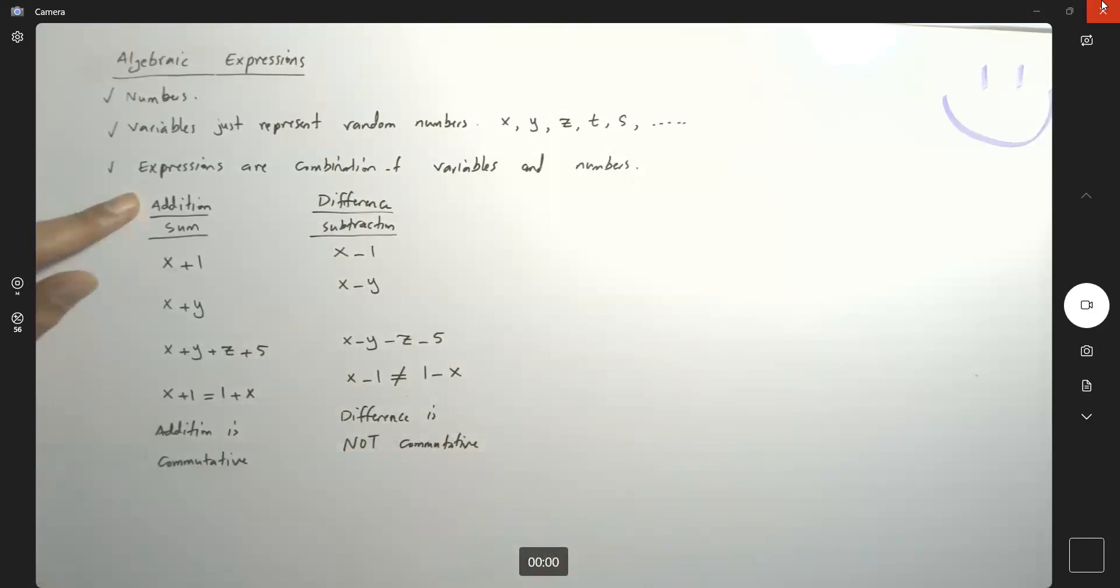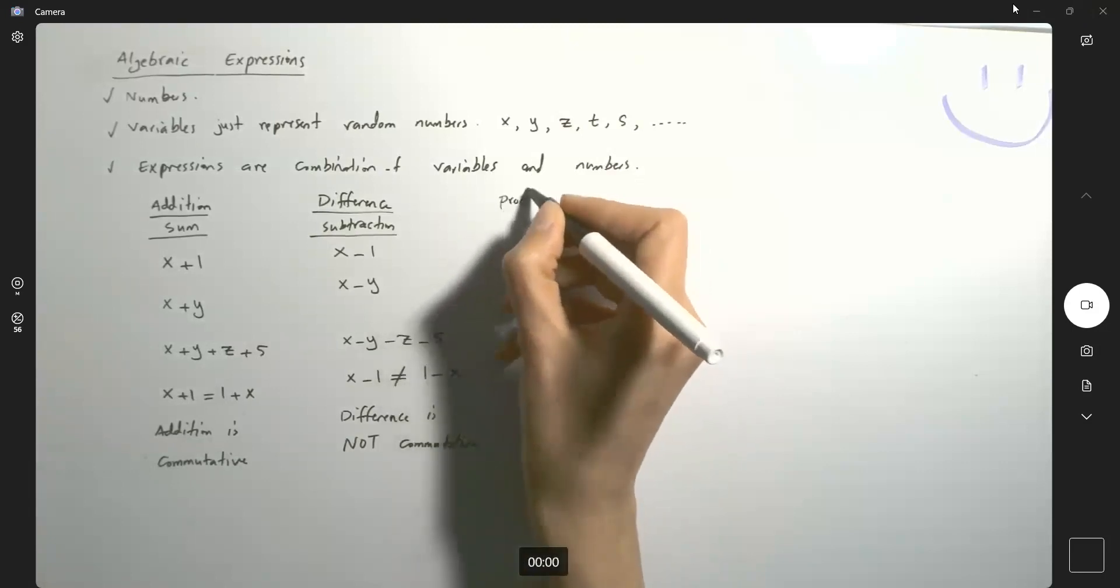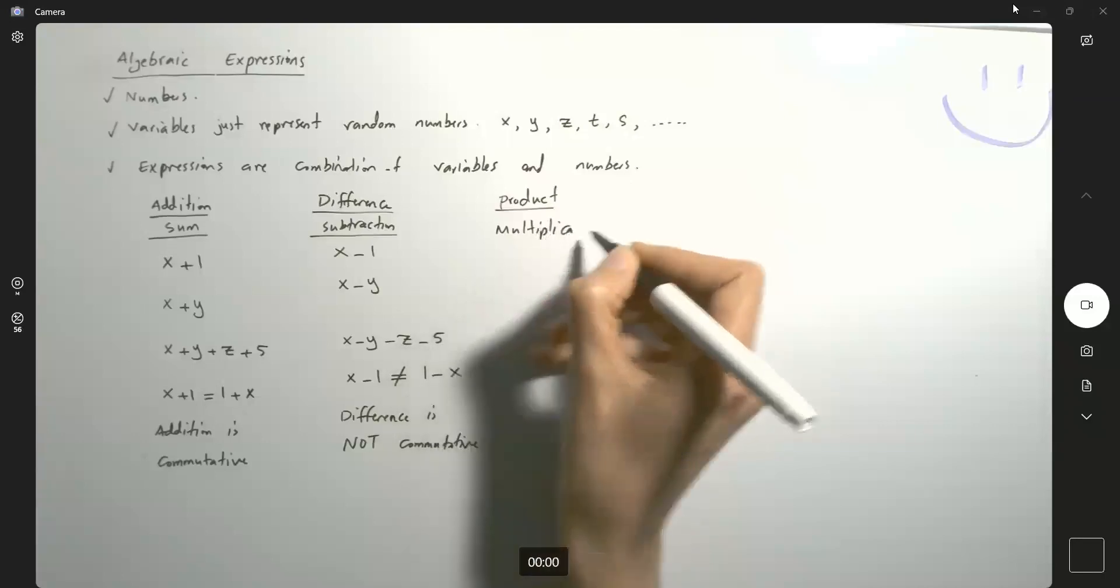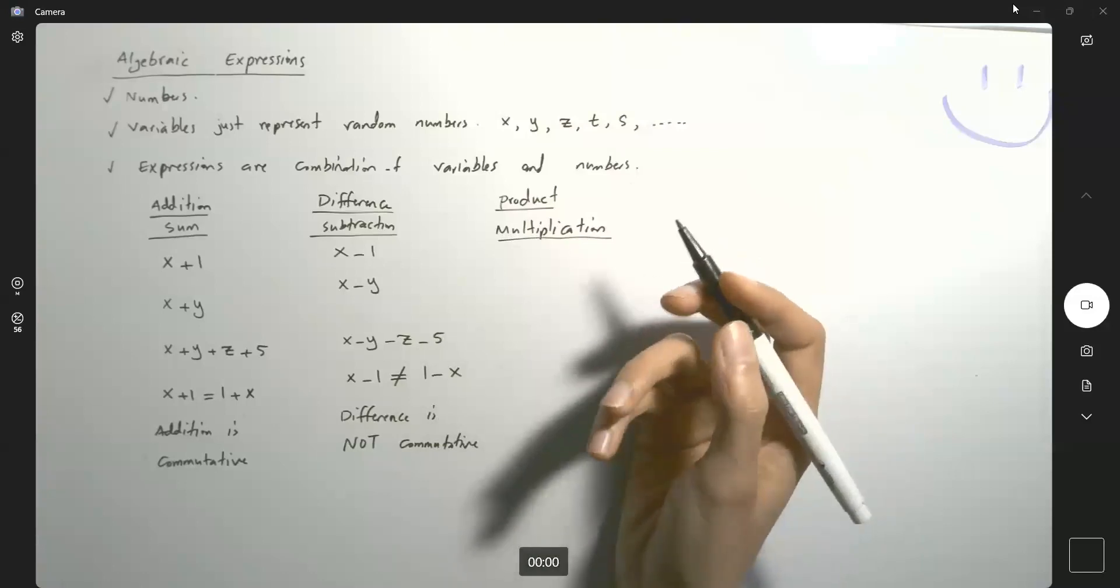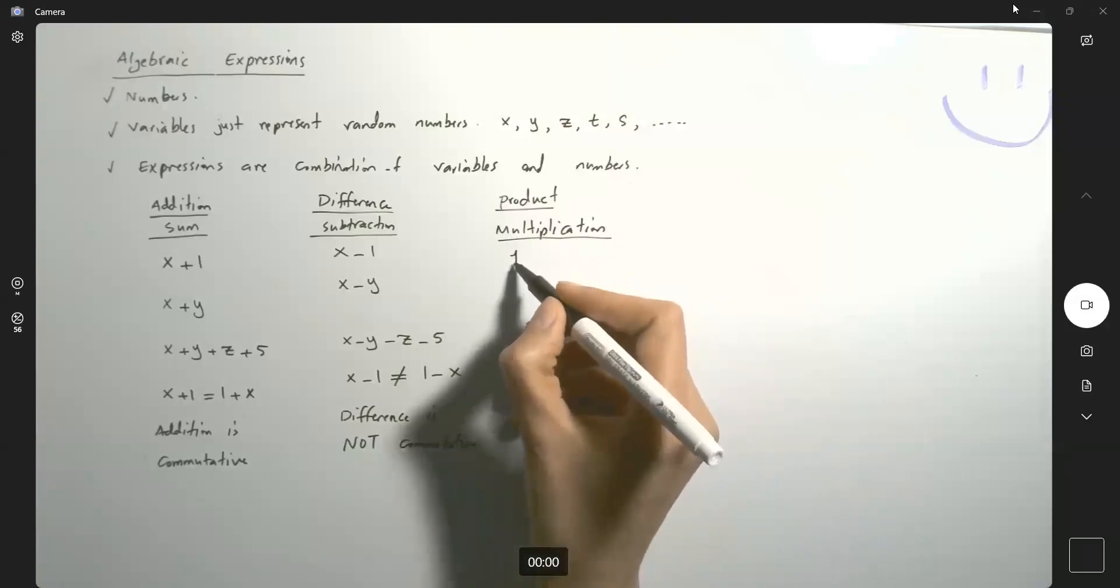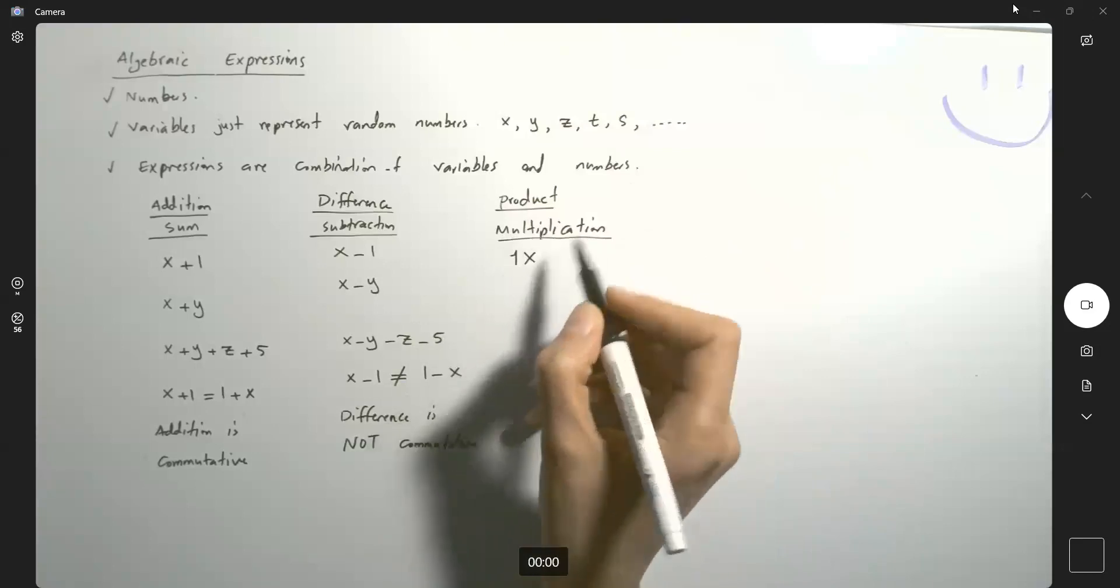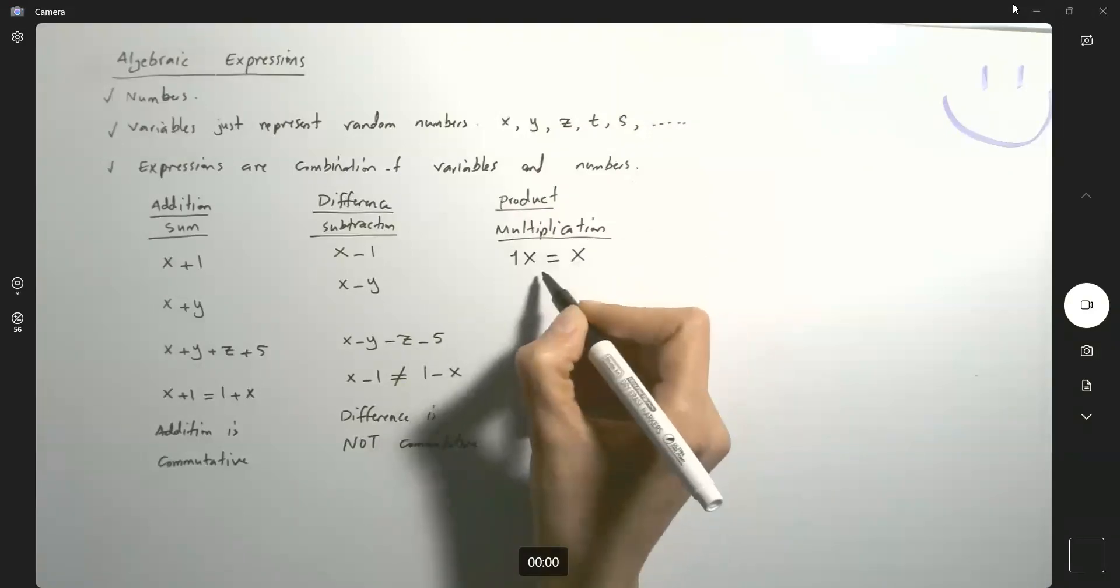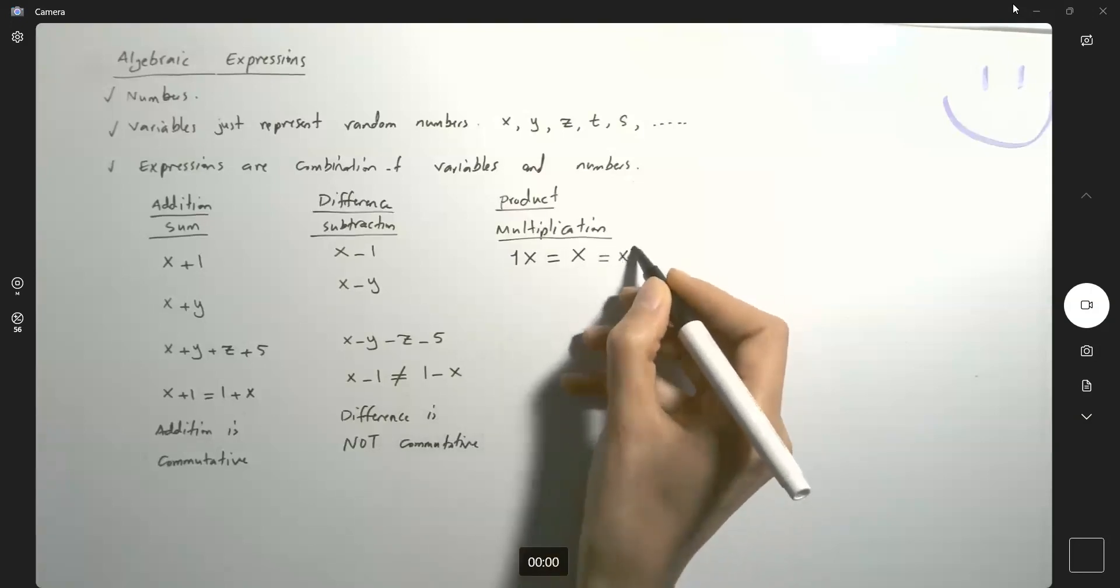So adding, subtracting, now multiplying. Why not? Product or multiplication. I can multiply a number and a variable. One times x. Guys, if you have one times x, you must simplify that and write x. One times x is equal to x. It's also equals to x times one.